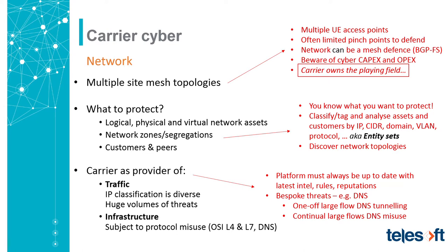In terms of infrastructure-specific threats to carriers, DNS is a notable one. There are bespoke threats: if you see a single large one-off DNS flow carrying a lot of data, it looks like DNS tunneling. But if that happens continually, it looks like DNS misuse — one of your customers potentially tunneling their data over DNS continuously to bypass billing or data charges, since DNS may not be scrutinized in the same way as other IP traffic. This is not unusual to find.